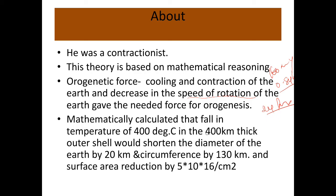He mathematically calculated that a falling temperature of 400 degrees Celsius in a 400-kilometer-thick outer shell would shorten the diameter of the earth by 20 kilometers, the circumference by 130 kilometers, and the surface area by 5 × 10^16 centimeters squared. So all these dimensions are reducing, according to his theory.